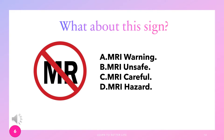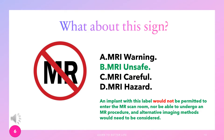A red circle across the letters MR represents what? This sign indicates MRI unsafe. An implant with this label would not be permitted to enter the MR scan room, nor be able to undergo an MR procedure, and alternative imaging methods would need to be considered.